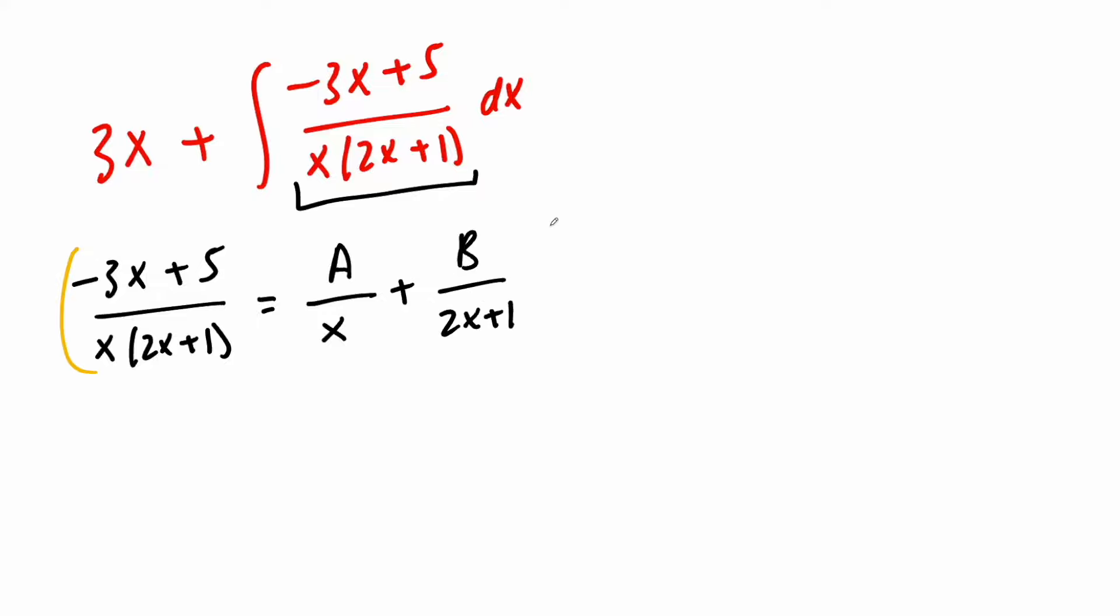And to get rid of the denominator, I'm going to multiply everything by x times 2x plus 1. And so this is going to get canceled out, and we're going to get negative 3x plus 5 is equal to a times. So these two pieces are going everywhere. So it's like a times x times this. So the x's are going to cancel, and we're going to get 2x plus 1, plus b times just x.